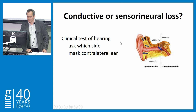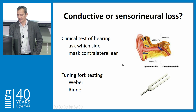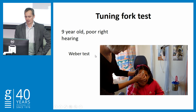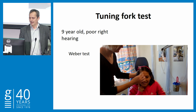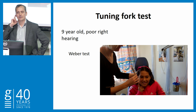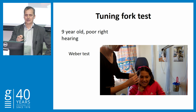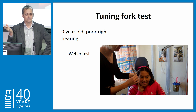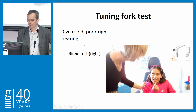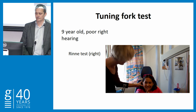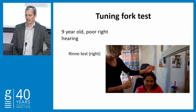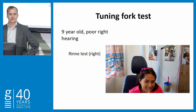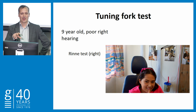Next we have tuning fork testing, which you're all familiar with. I have a patient here with middle ear pathology. She performed a Weber test and the patient said she could hear it on the right-hand side — so she has poor hearing on the right. The tuning fork placed on the head: she can hear it louder on the right-hand side. What kind of hearing loss is that? Conductive hearing loss. We check that with the Rinne test — in front or behind? She could hear it louder behind.